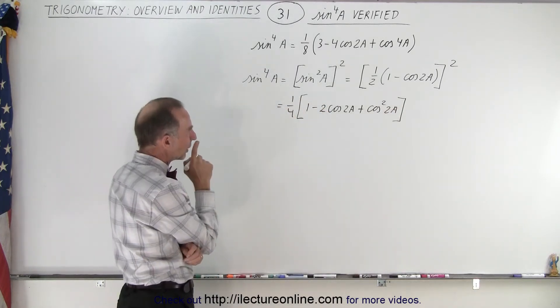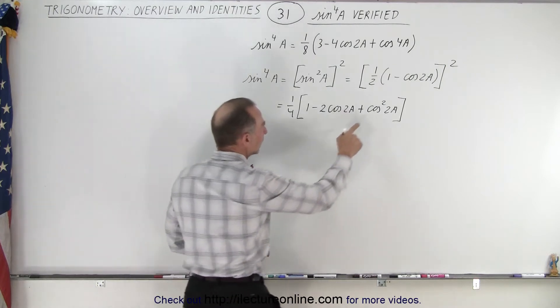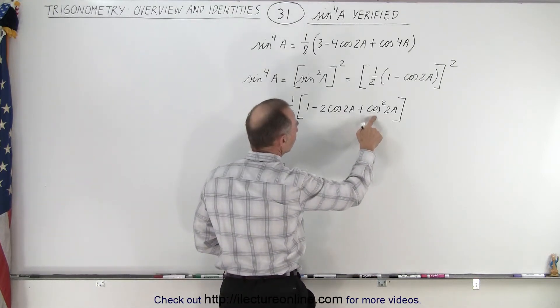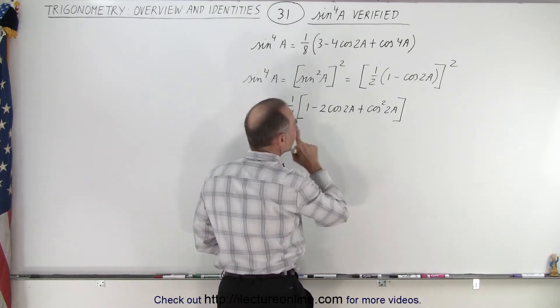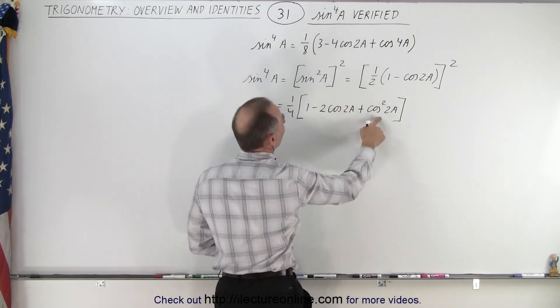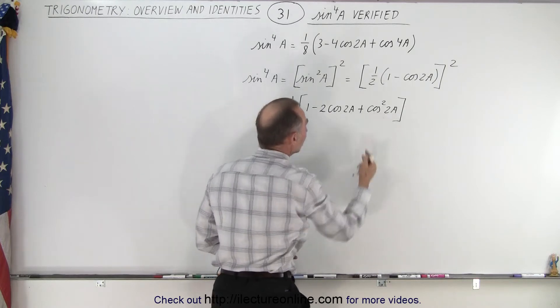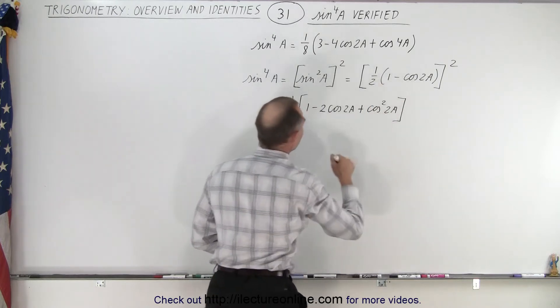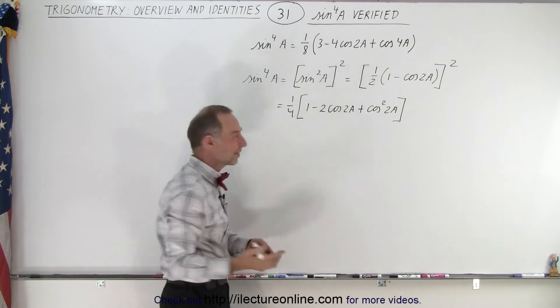Alright. I think what we can do now is we can take this quantity right here and write it as, let's see, we're trying to get this. So we want this to be expressed as a 4a, so then we can do the same thing we did over here, but then for the cosine instead of the sine.